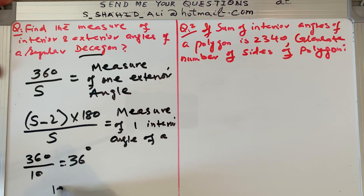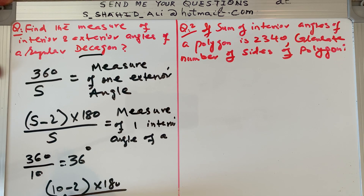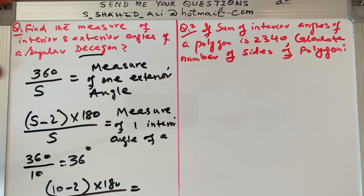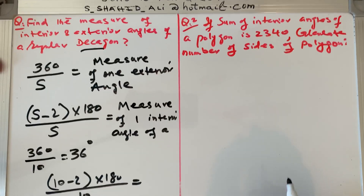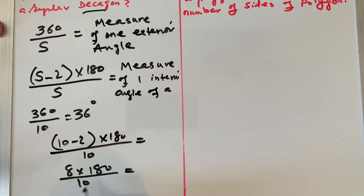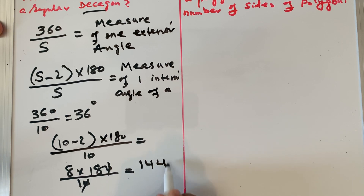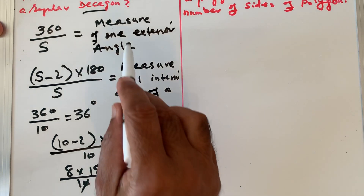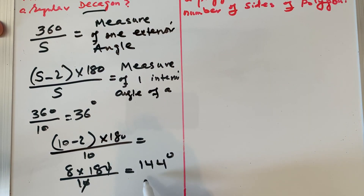For the interior angle: s is 10, so we calculate (10 minus 2) times 180 divided by 10. That is 8 times 180 divided by 10. The zero cancels, and 18 times 8 gives 144 degrees. So the interior angle of a regular decagon is 144 degrees.